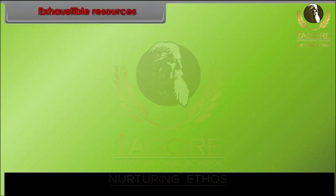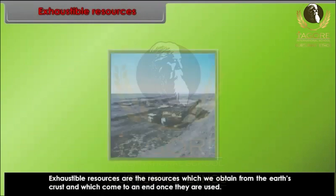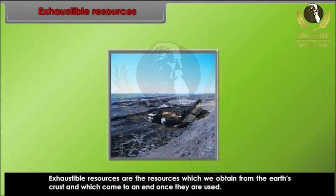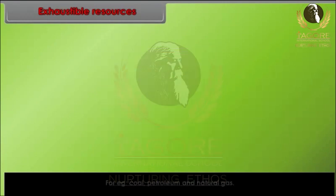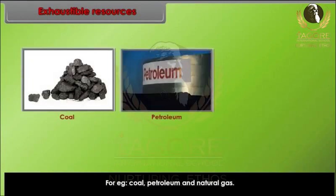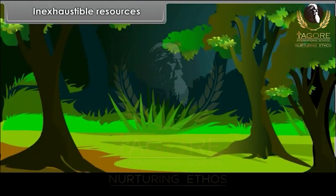Exhaustible resources are the resources which we obtain from the earth's crust and which come to an end once they are used. They cannot be replaced. For example, coal, petroleum, and natural gas.